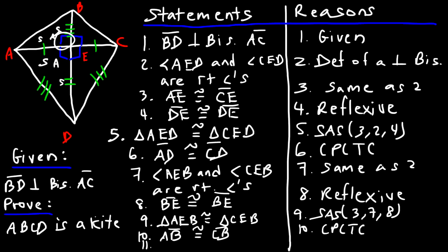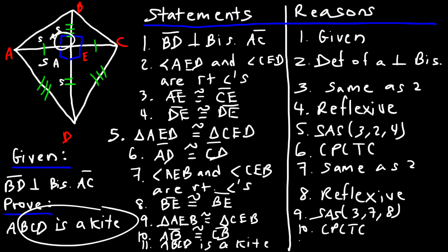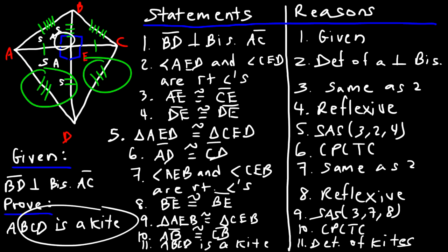Finally, statement eleven: ABCD is a kite, with the reason being the definition of kites. If you can show that AB and BC are congruent and also that AD and DC are congruent, that's one way you can prove that the quadrilateral is a kite.